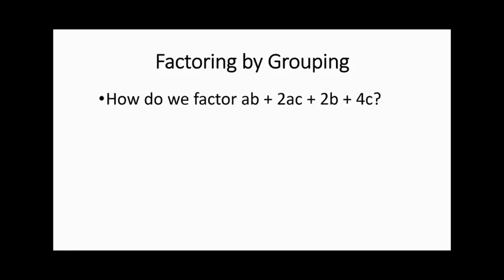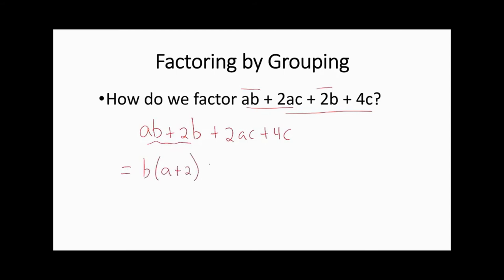Factoring by grouping. How do we factor something of this form? The first two terms have a in common, the last three terms have 2 in common. Let's group ab plus 2b, and separately 2ac plus 4c. From the first group, we pull out b to get b(a plus 2). From the second group, we pull out 2c to get 2c(a plus 2). Now both terms share the common factor (a plus 2), so we pull it out, leaving (a plus 2)(b plus 2c).